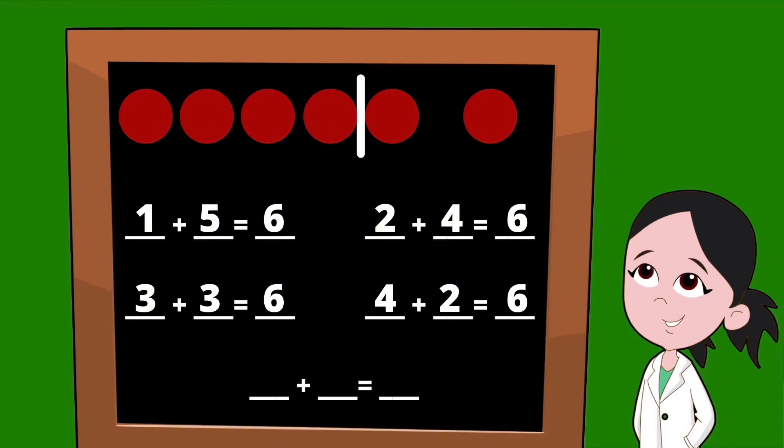Let's go ahead and slide that dot over just one more time to the right. And our last set of partners for the number six, how many dots are on the left side of our line? That's right. On the left side of the line, we have five dots. So our first partner is going to be a five. On the right side of our line, we have just one dot. So our partner is going to be a one. Five plus one equals six.